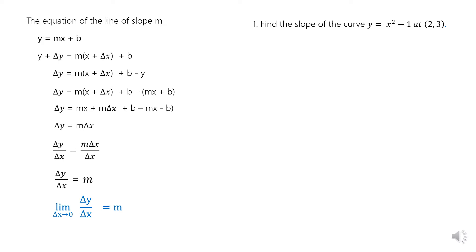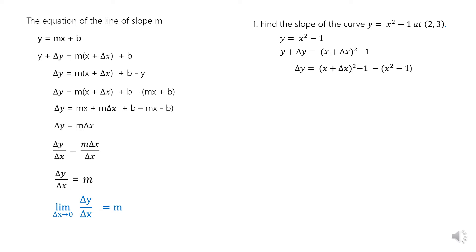Example 1: Find the slope of the curve y = x² − 1 at point (2, 3). From the equation y = x² − 1, we determine the slope using the increment method. Replace y with y + Δy and x with x + Δx. Solve for Δy and substitute the value of y = x² − 1.